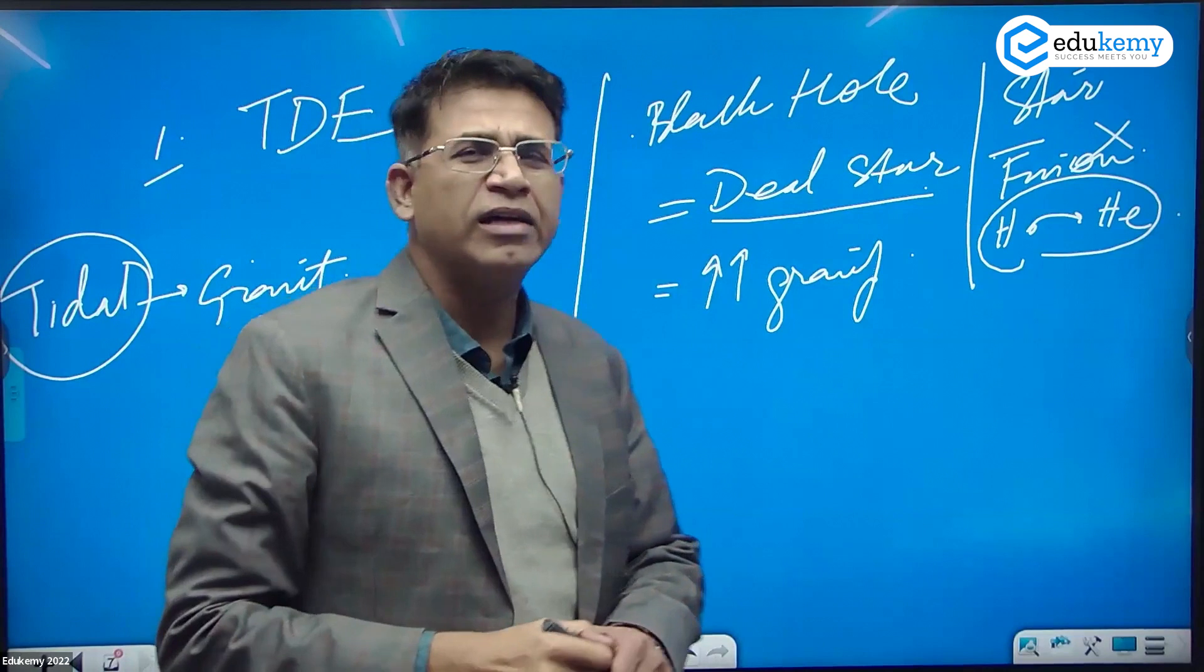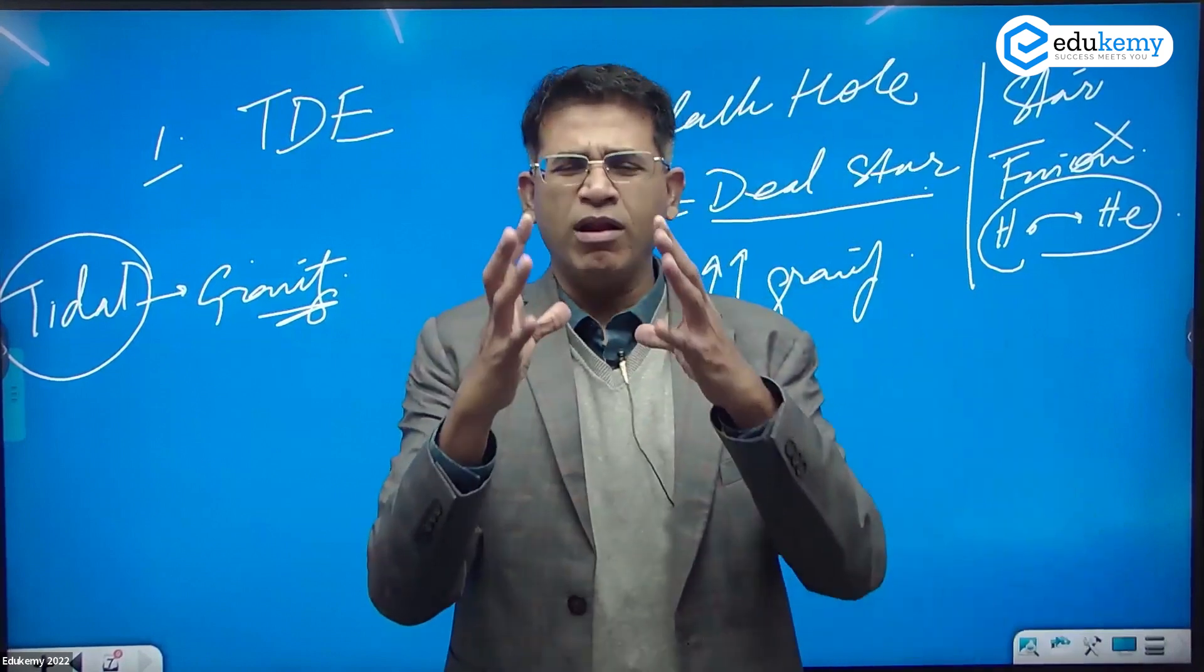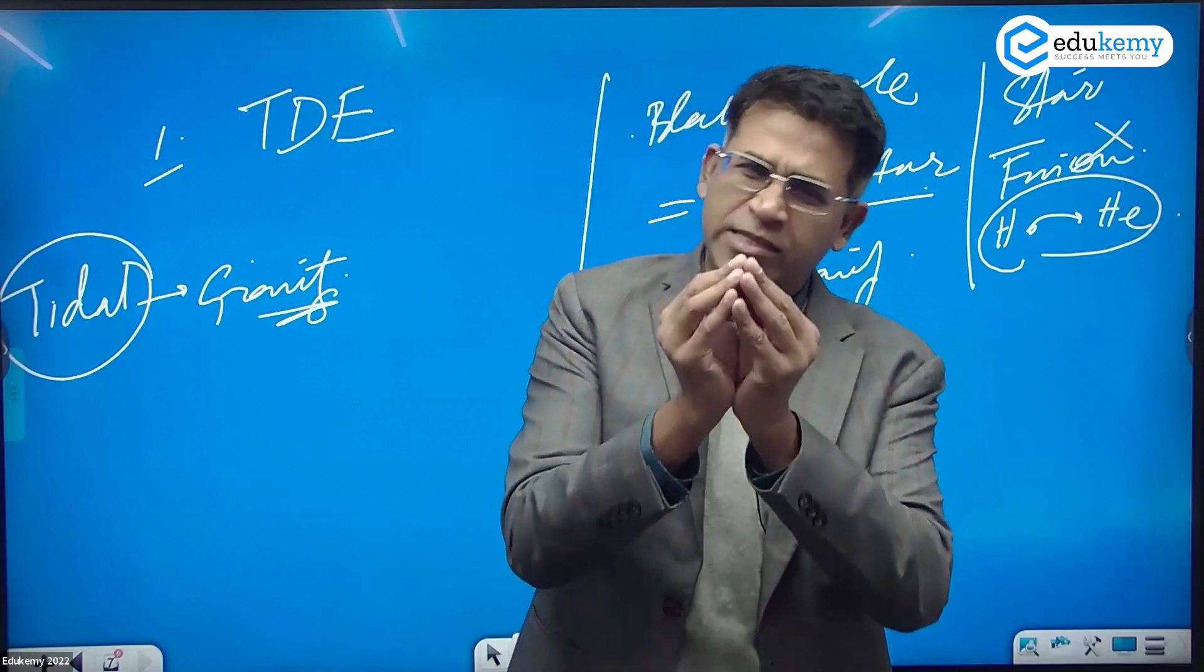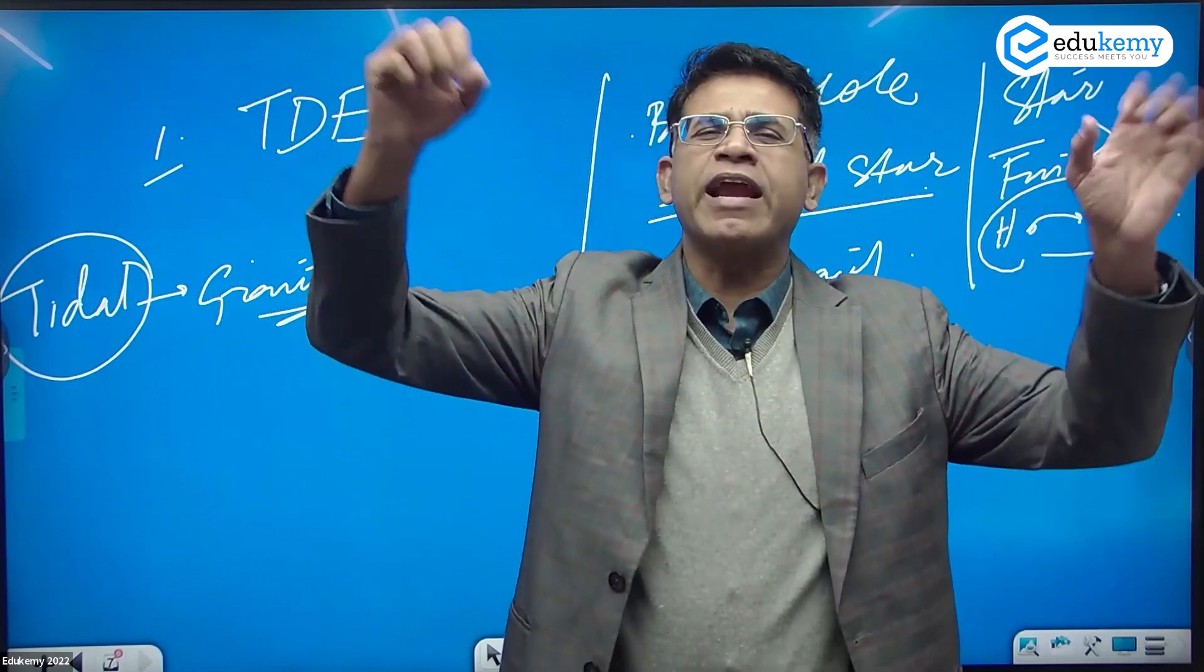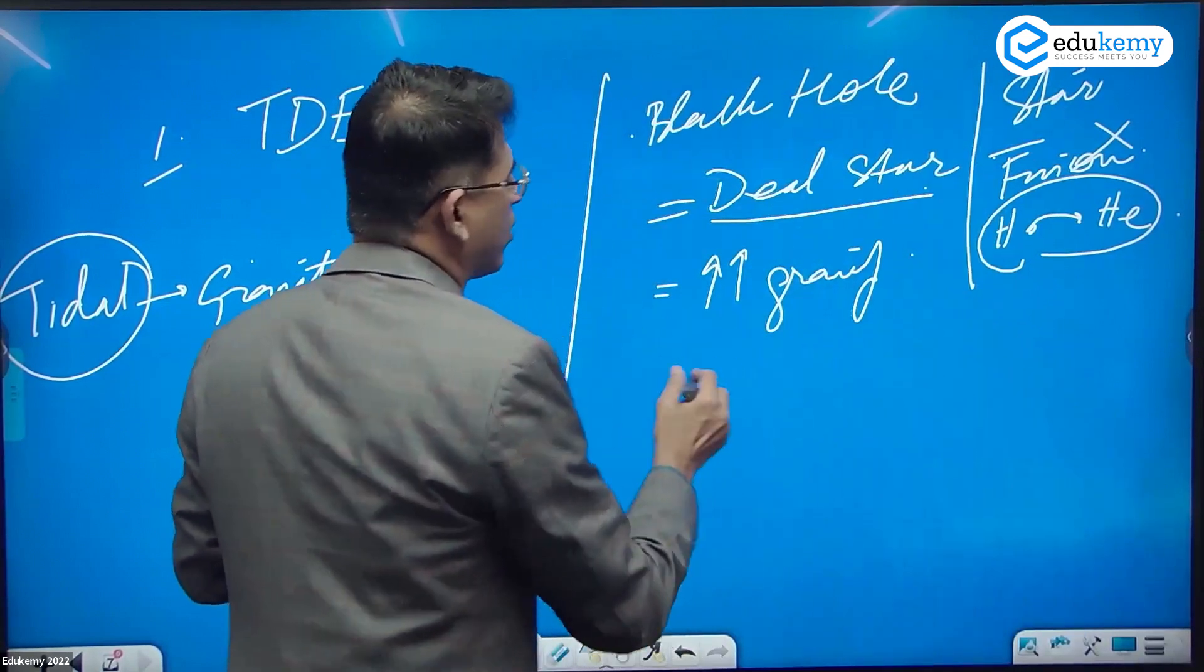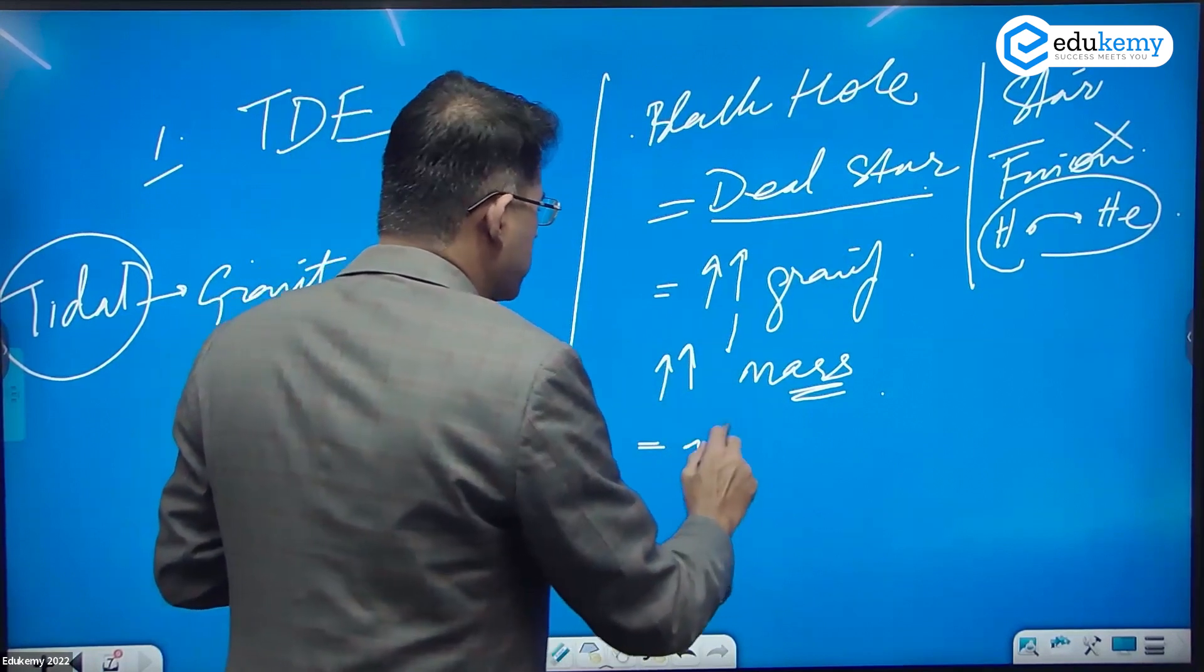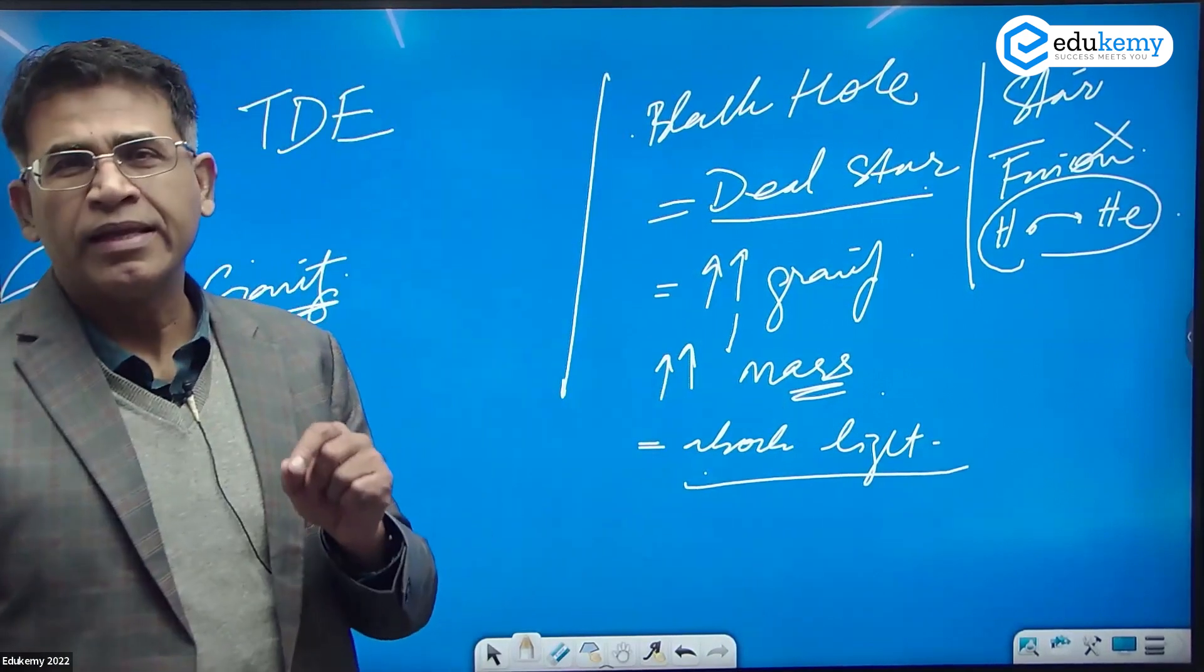A dead star is not a star that has disintegrated. A dead star is like a ball which is very hot and burning, then becomes cold and reddish, and finally dies down, but it remains a ball. The mass is still there. It's not that the black hole will disintegrate and explode. A black hole is a dead star with very high gravity because it has a very high amount of mass.